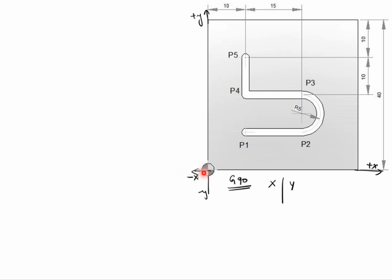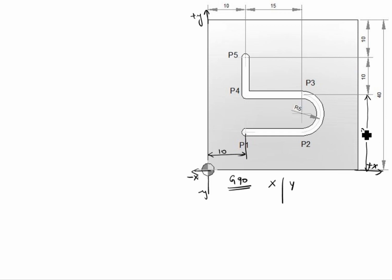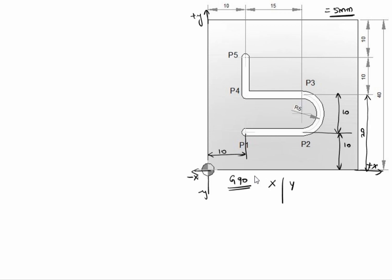The starting point begins at P1. The P1 value is 10. The overall value here is 40 given, so this value is 20. This value is 10, this value is 10. The thickness of this material is assumed to be 5mm. All dimensions given are in mm only.